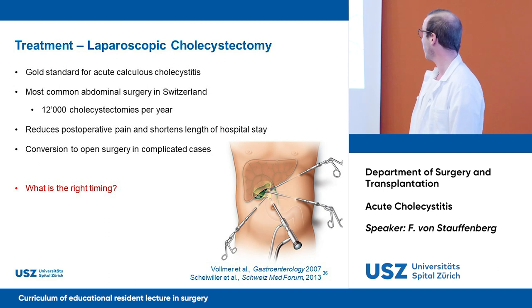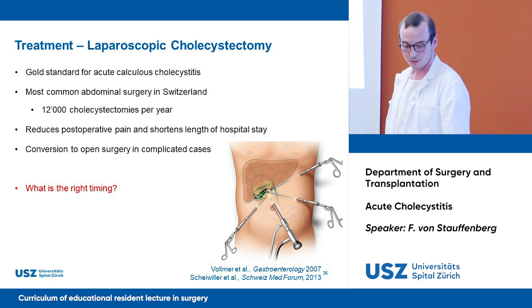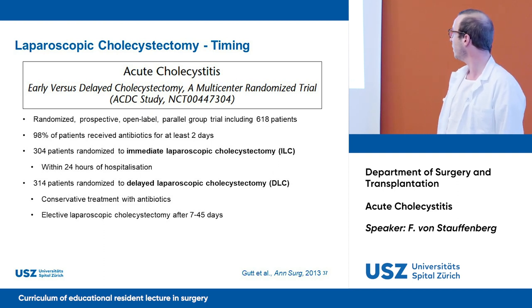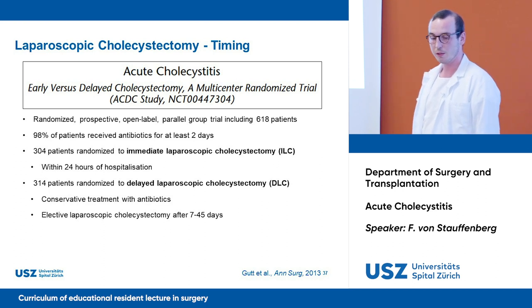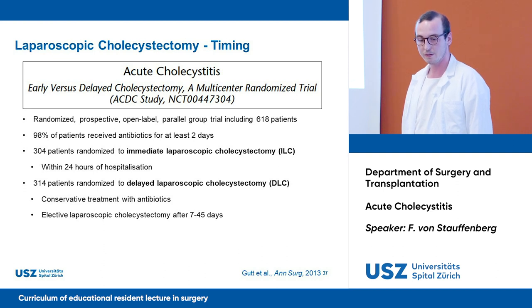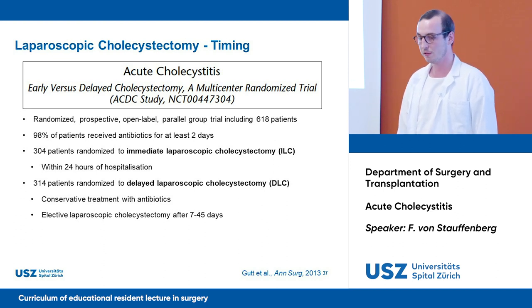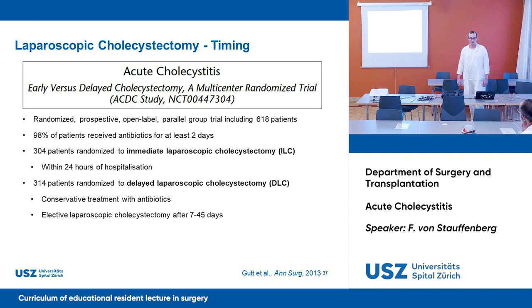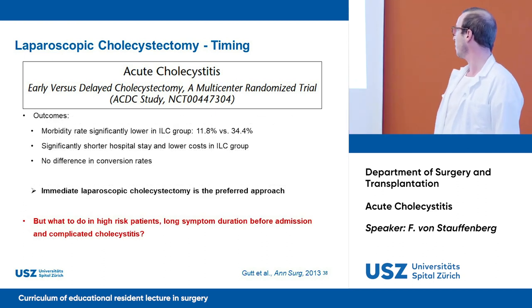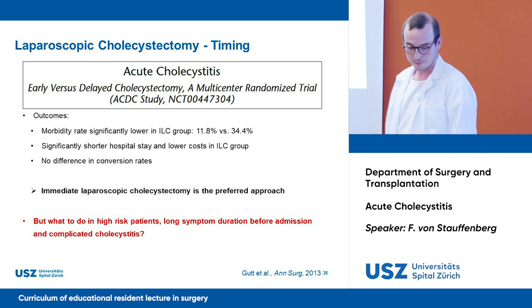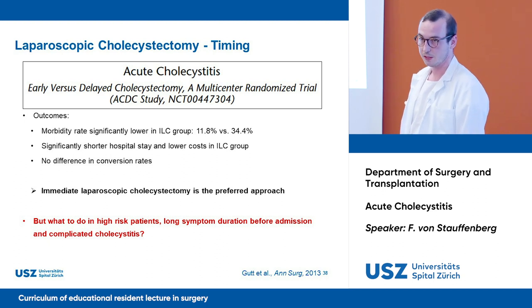An important question of recent years is the right timing for laparoscopic cholecystectomy. The 2013 ACDC study was a landmark trial: a randomized prospective open-label parallel-group trial including 618 patients. Half were randomized to immediate laparoscopic cholecystectomy within 24 hours of hospitalization; the other half received initial conservative treatment with antibiotics and elective surgery after 7 to 45 days. Outcomes showed significantly lower morbidity and shorter hospital stay with lower costs in the immediate group, with no difference in conversion rates. Immediate laparoscopic cholecystectomy is therefore the preferred approach.